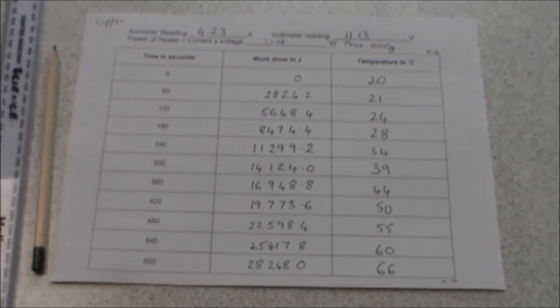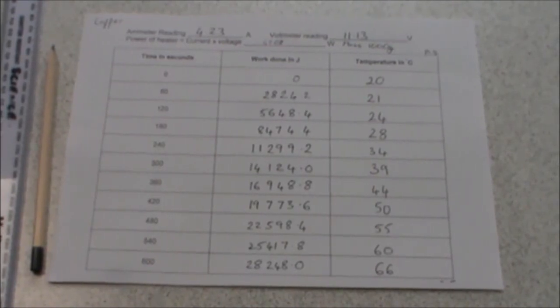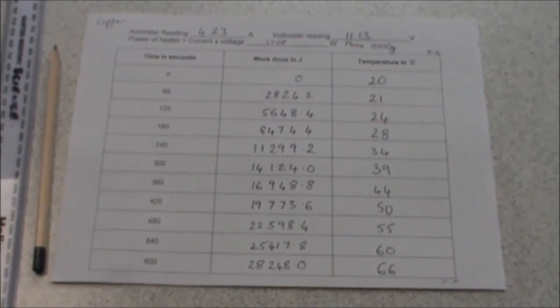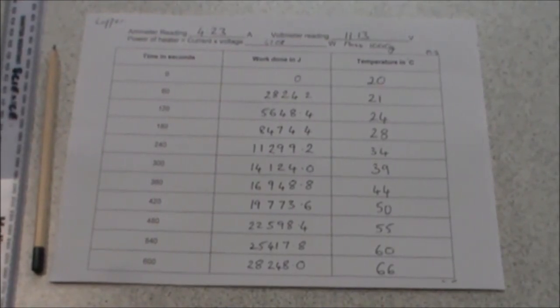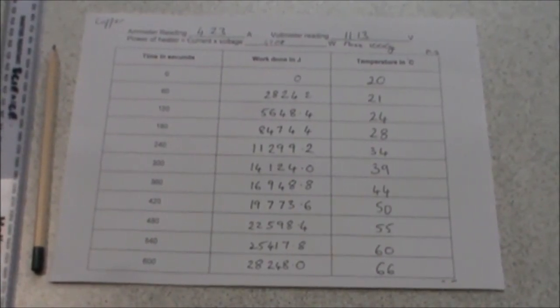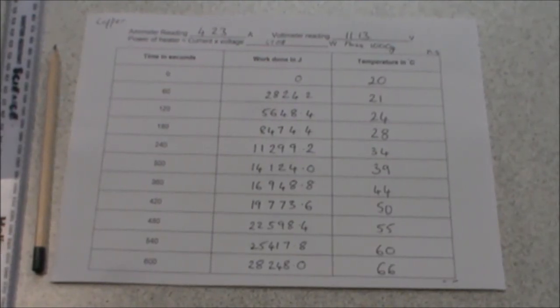These are the work done calculations for the copper block, with a mass of 1000 grams, an ammeter reading of 4.23 amps, and a voltmeter reading of 11.13 volts. I'm going to plot these on my graph. Work done in joules on the x-axis, temperature in degrees C on the y-axis. The first thing I have to do is choose a suitable scale. We can see that my work done goes up to 28,248, so a suitable scale would go up to 30,000. That will allow me to go up in even steps, probably of 5,000. The temperature goes from 20 to 66, so I would want to go up in tens to 70 degrees.